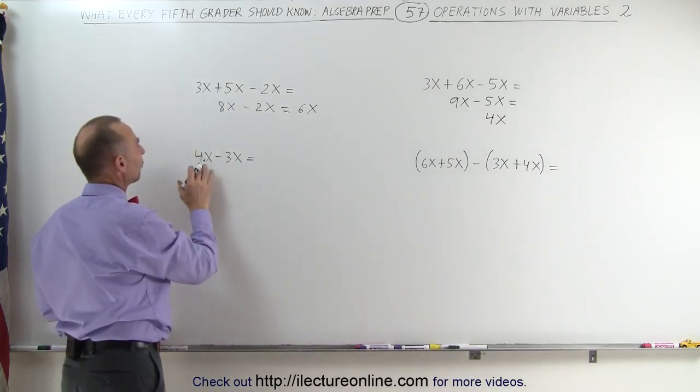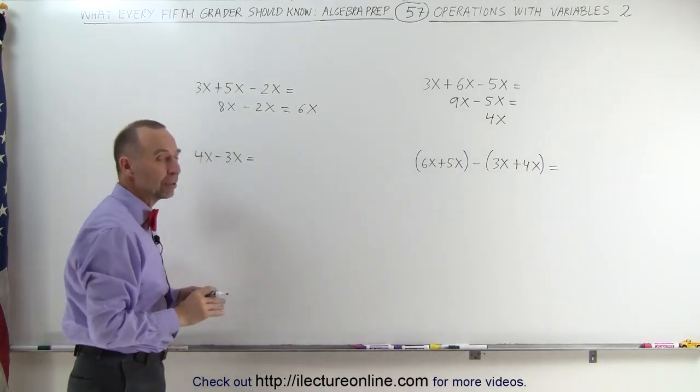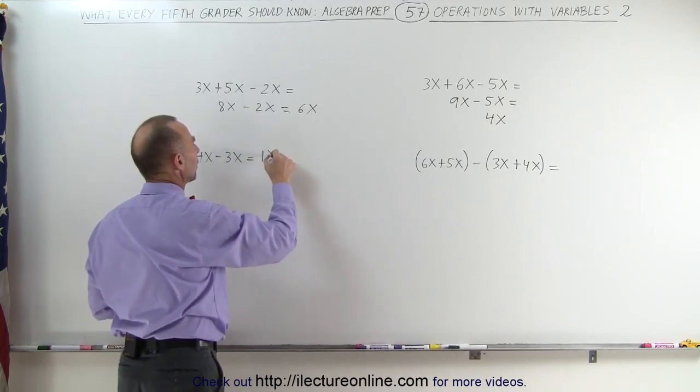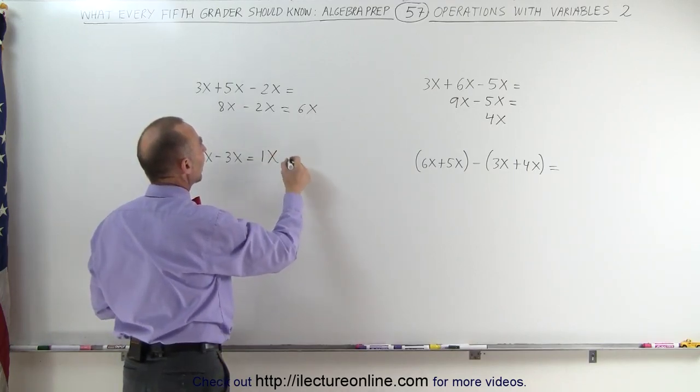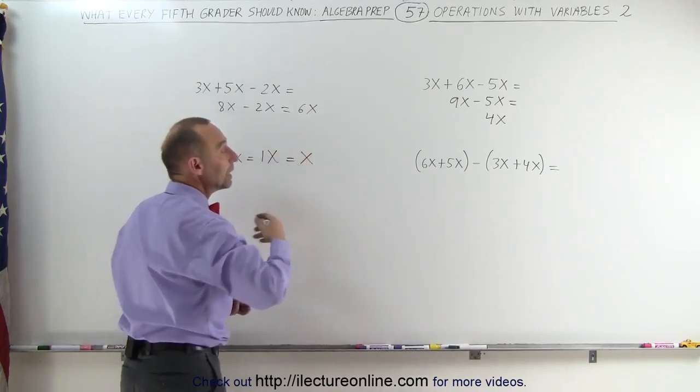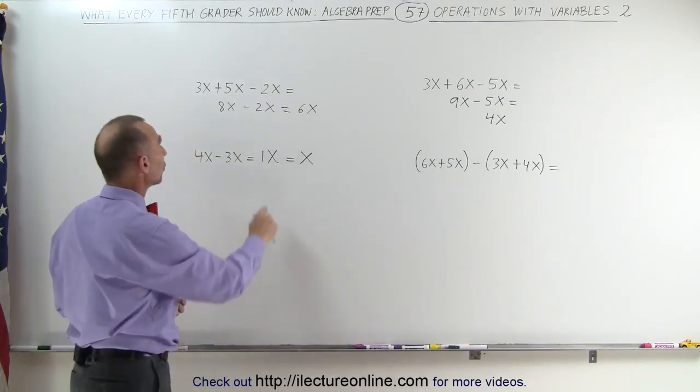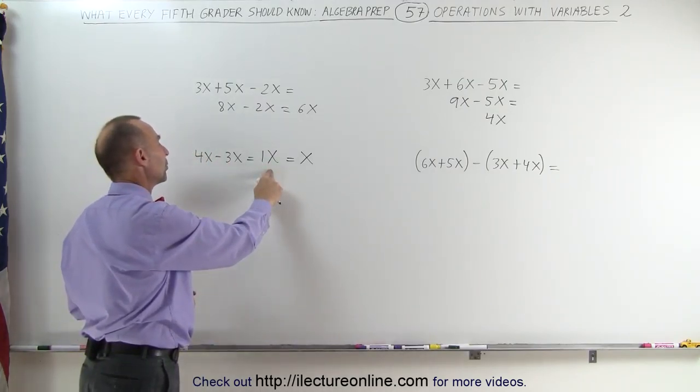Over here, we have 4x minus 3x. Well, that's equal to 1x. Now, do we write 1x or can we simply write x? And the answer is, we can do either one. It is okay to write 1x, but most people simply write x.